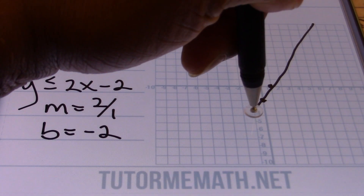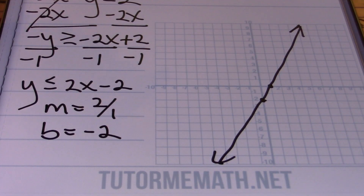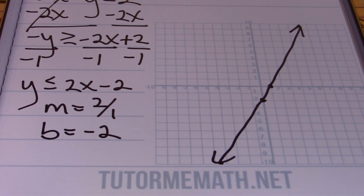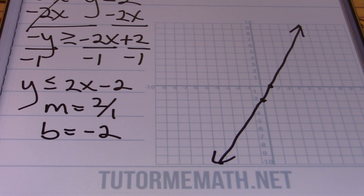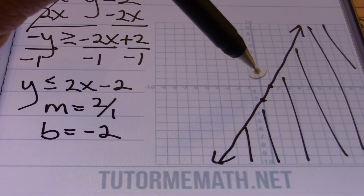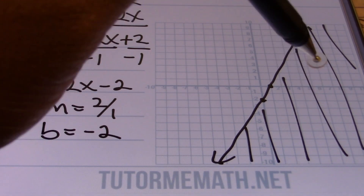I'll use a solid line because it's a less than or equal to symbol. Using the origin as a test point — since my line does not go through the origin — if I replace y and x with zero, this reads: is 0 less than or equal to negative 2? That's not true. So I'll shade on the other side of the line, over here on the right side, because plugging in my test point of (0, 0) gives a false statement.